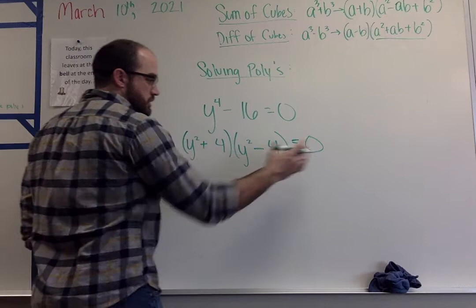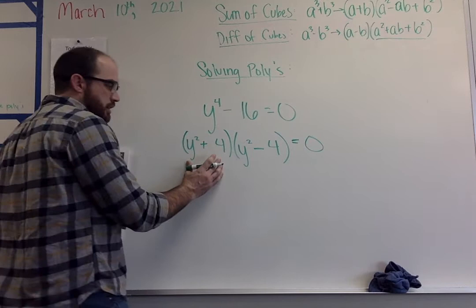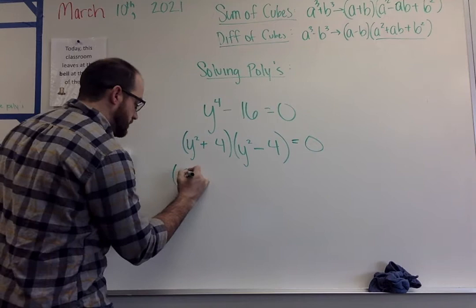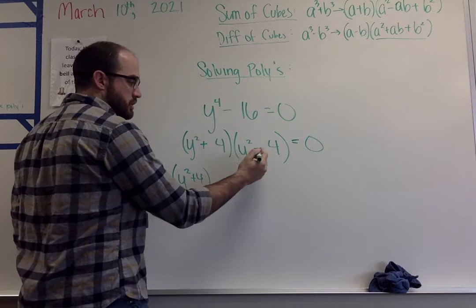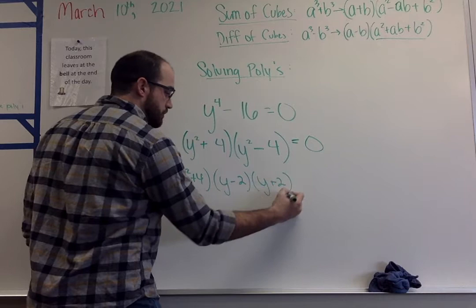Before I put these equal to zero, I need to make sure I've factored this completely. So the first one here, yes it's a perfect square, yes it's a perfect square, but it's a plus. So this one comes down and doesn't change. This one, perfect square, perfect square, we have a minus. So this one splits up into (y - 2)(y + 2). Again, square root of y² is y, square root of 4 is 2, one minus one plus.